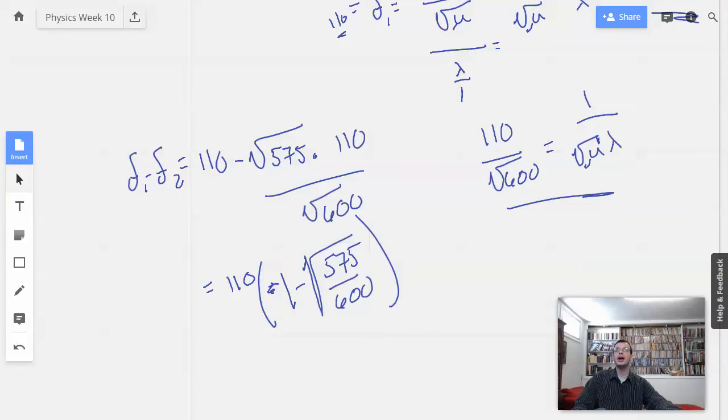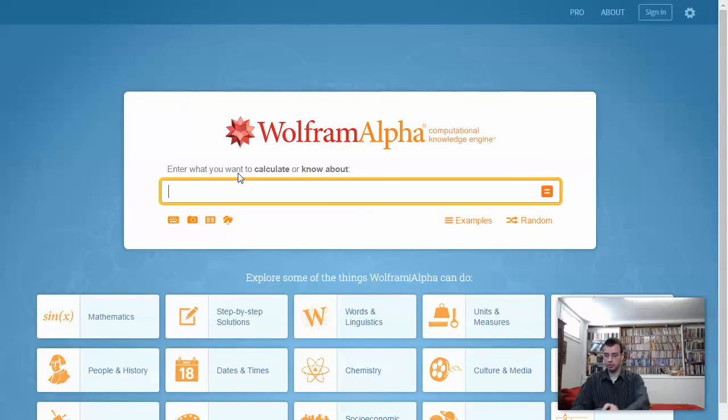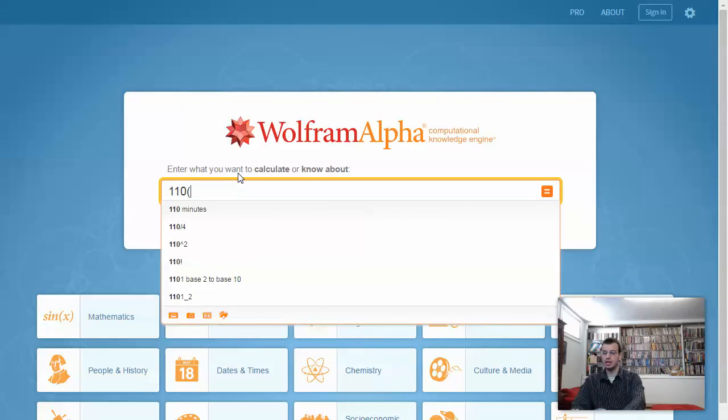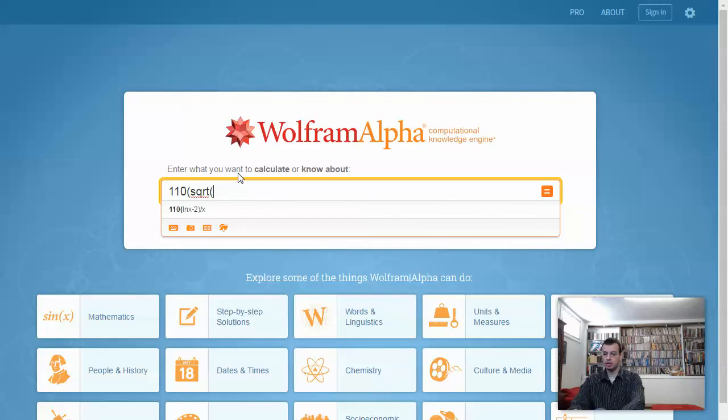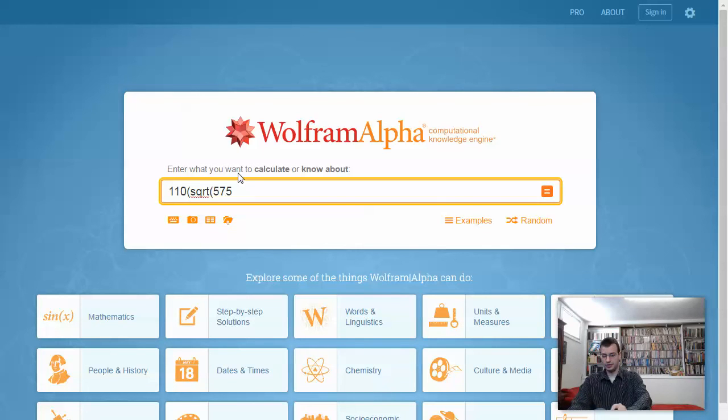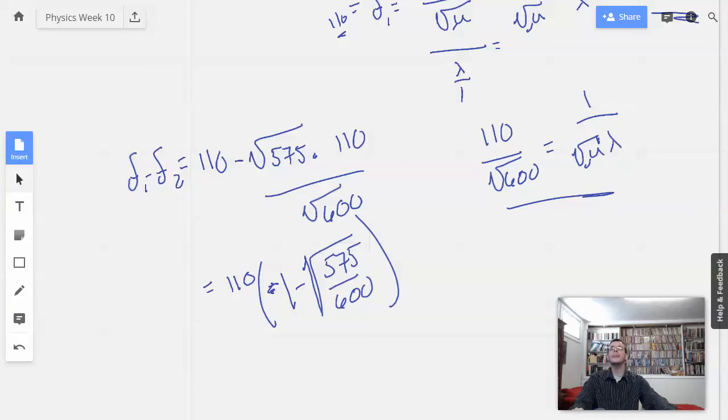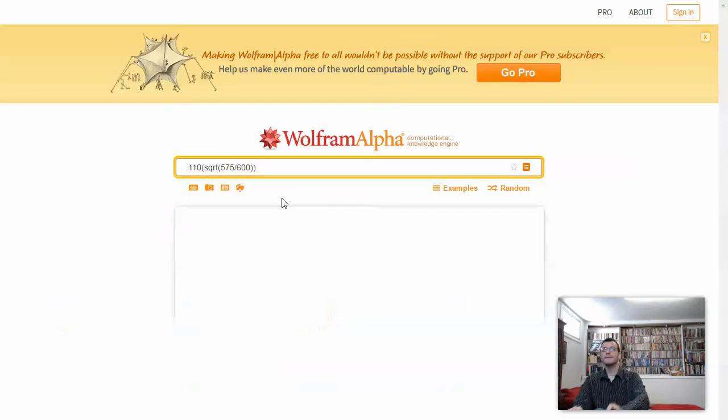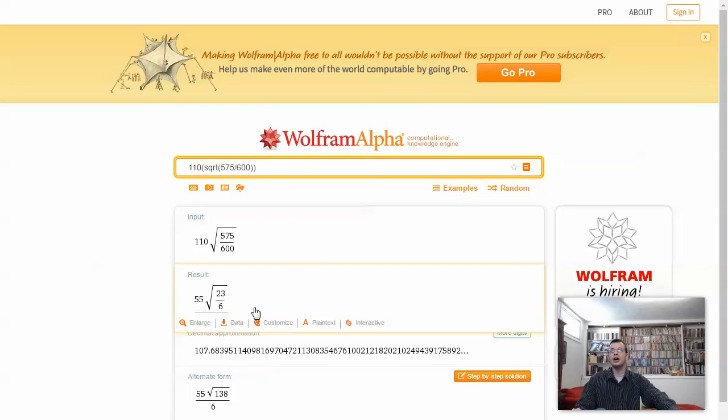Let's go with that. So, I'm going to do it. 110 times square root of 575 divided by 600.